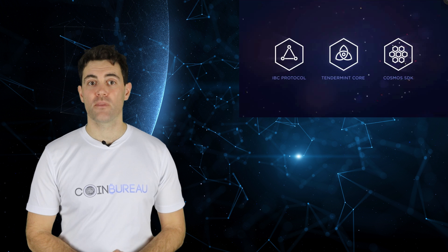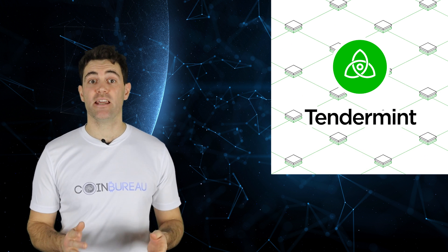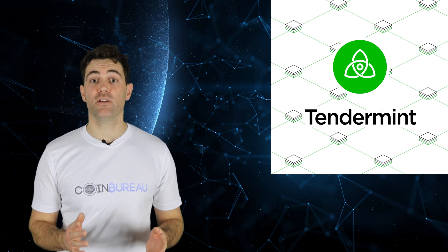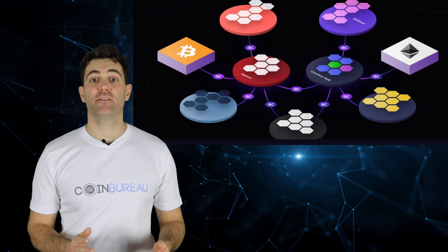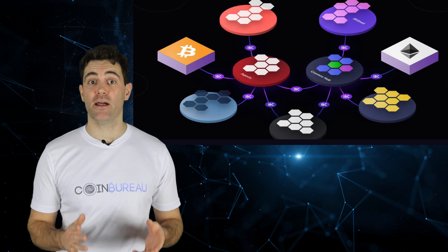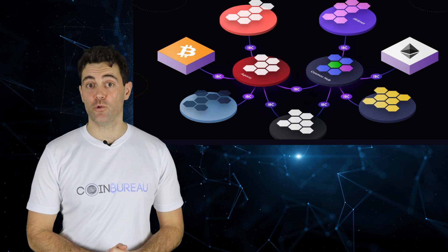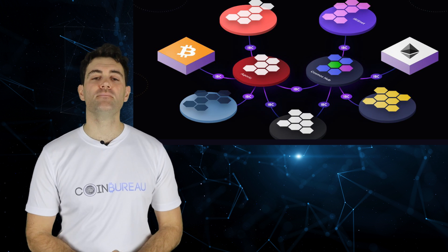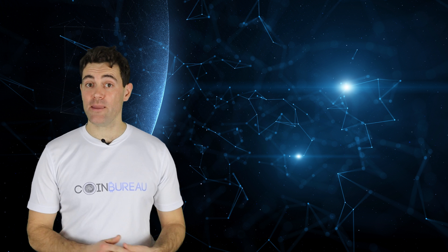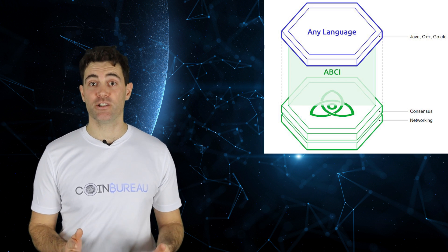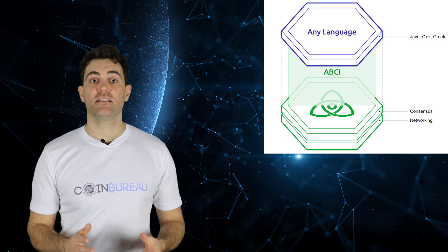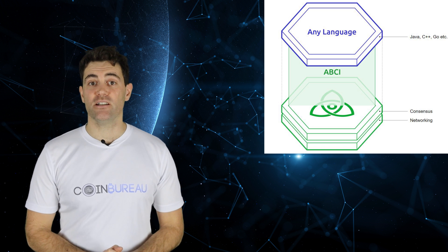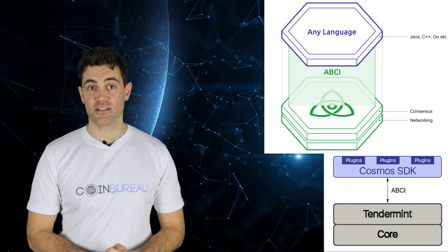The Tendermint core contains the Tendermint Byzantine Fault Tolerance, or BFT, consensus algorithm. It also houses the Inter-Blockchain Communication Protocol, or IBC. IBC is a method through which network layers and the consensus layer communicate to the hub and all the other connected blockchains, which Cosmos calls zones. You can think of it as akin to the TCP/IP networking protocol that powers the internet. Next up is the Application Blockchain Interface, or ABCI.